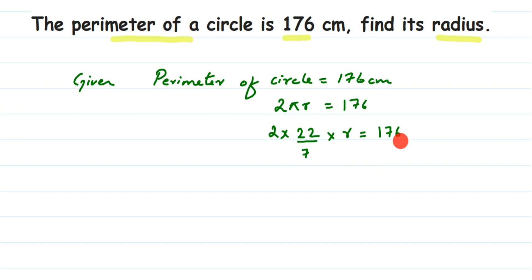So how to do this? If you see here, the 7 is in denominator, right? It's in division. So when you transpose the number from division to the other side of the equation, it will get multiplied. So here the 7 will get multiplied with 176. So let me write down that. This is equal to 176 multiplied by 7. So I have transposed 7 to the other side.